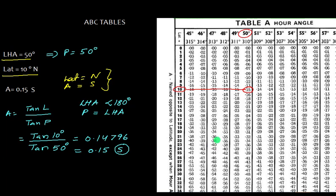In case you forget the naming part, you will see in the almanac table it is always written: A is named opposite to latitude, except when the hour angle is between 90 and 270.